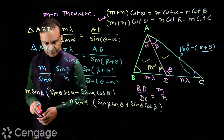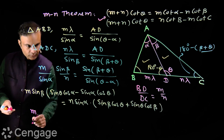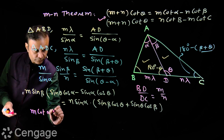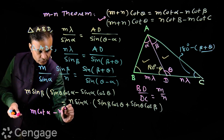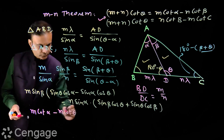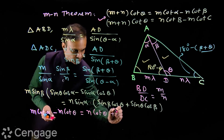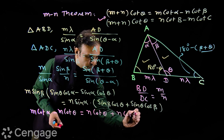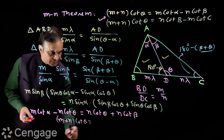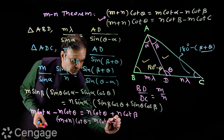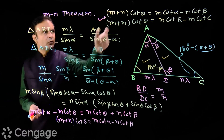On both sides we divide by sin theta·sin alpha·sin beta. We get m·cot alpha minus m·cot theta equals n·cot theta plus n·cot beta. Rearranging, we get (m + n)·cot theta equals m·cot alpha minus n·cot beta. This is the first formula for the MN theorem.